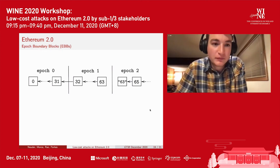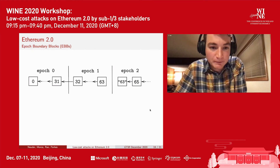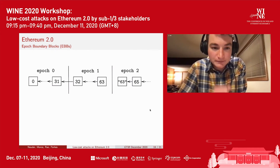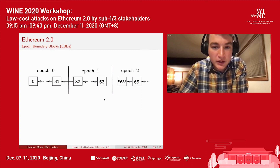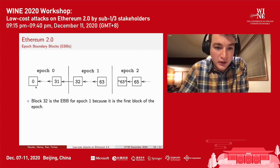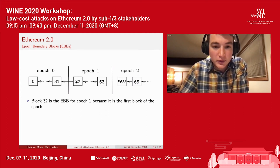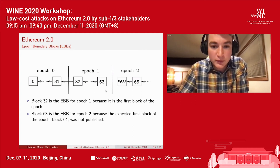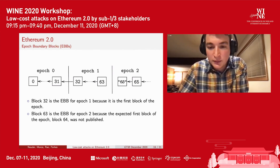Checkpoint blocks are defined as epoch boundary blocks, which represent the state of all the blocks within a specific epoch. An honest validator determines an epoch boundary block by looking for the first block in an epoch. For example, in a 32-slot epoch, block 32 is the epoch boundary block for epoch 1. For epoch 2, we'd look for block 64, but if it's not there, honest validators borrow the highest slot block from the previous epoch — in this case, block 63 from epoch 1.